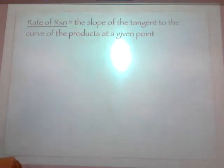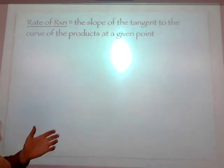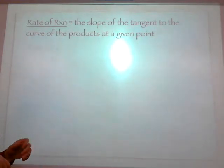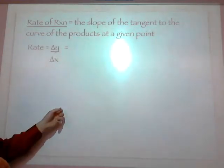So the slope is the tangent. The slope of the tangent to the curve at any given point is the actual rate of the reaction. Because the rate of the reaction is the change in concentration over the change in time. Change in y over change in x.